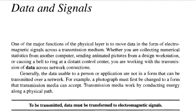Generally, the data usable to a person or application are not in the form that can be transmitted over a network. For example, a photograph must first be changed to a form that transmission media can accept. Transmission media work by conducting energy along a physical path. To be transmitted, data must be transformed to electromagnetic signals.